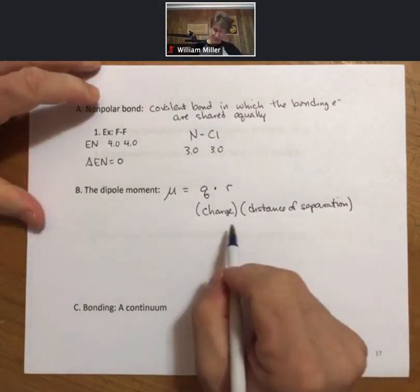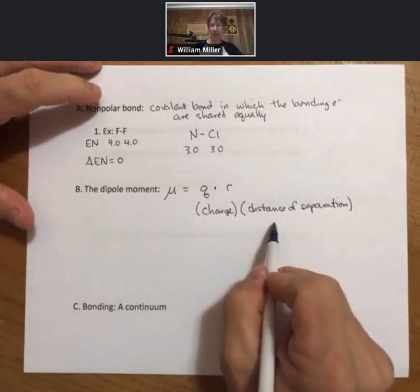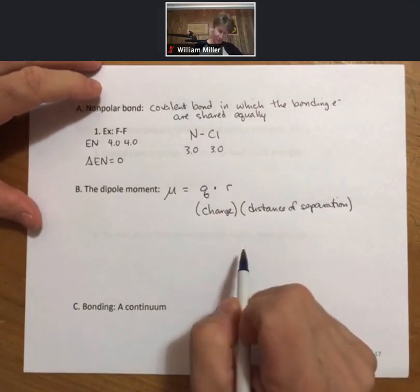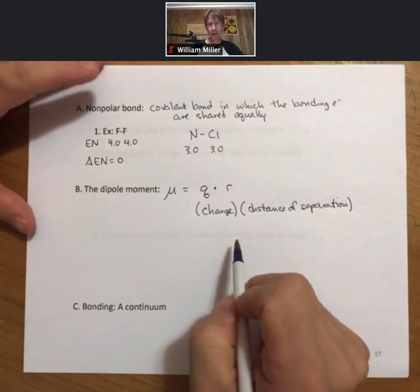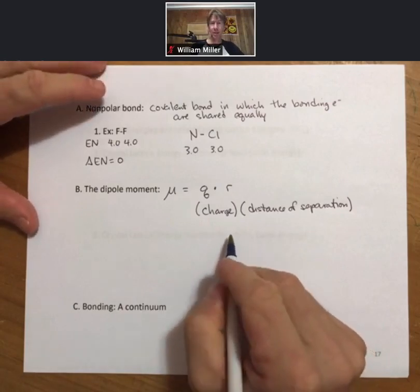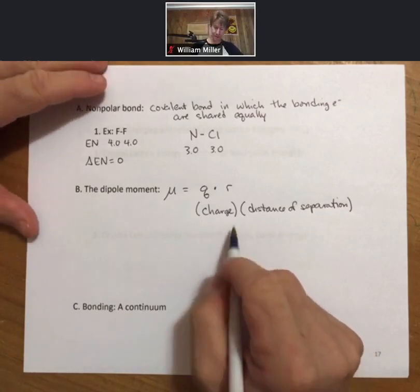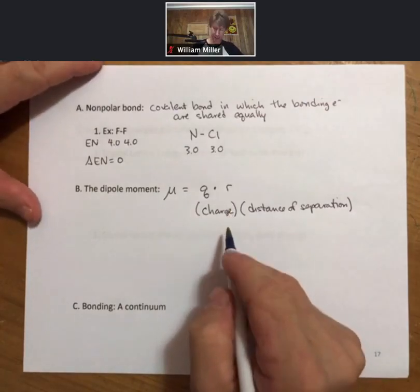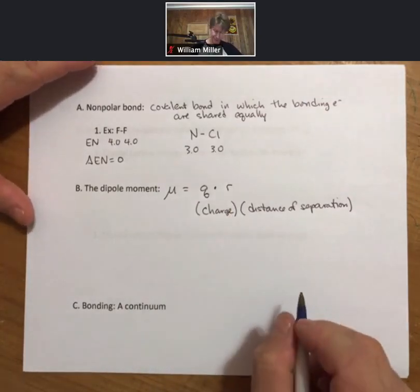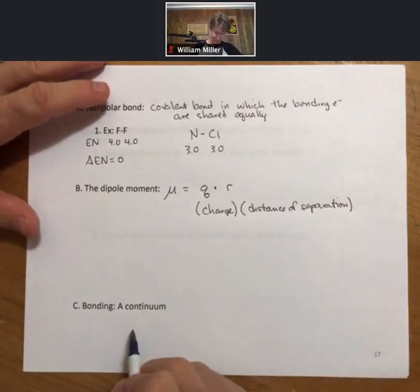The dipole moment takes into effect the actual sizes of the atoms involved as well. But we won't need that—that's a layer of the chemistry onion deeper than we need to go in this course, although you will see it in more advanced chemistry courses. Now let's talk about bonding as a continuum.